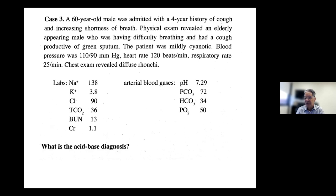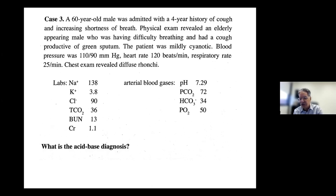If it's acute respiratory acidosis raising pCO2 from 40 to 72 — a change of about 32 — for every 10 increase in pCO2 acutely the bicarbonate only goes up about 1 to 1.5. That didn't occur here; bicarbonate went up by about 10. By default we're left with chronic respiratory acidosis. The rule: for every 10 increase in pCO2, bicarbonate goes up 3.3 to 3.5. These numbers are compatible with chronic respiratory acidosis, meaning the patient has been hypoventilating for at least four or five days. Clinically this is chronic bronchitis.